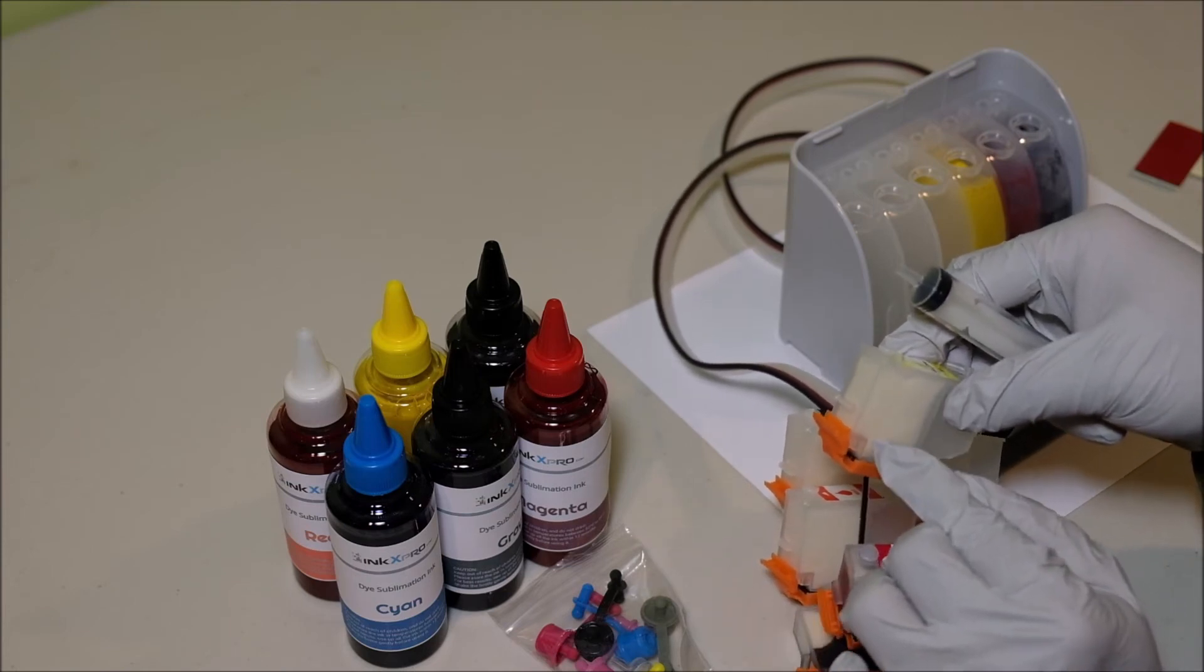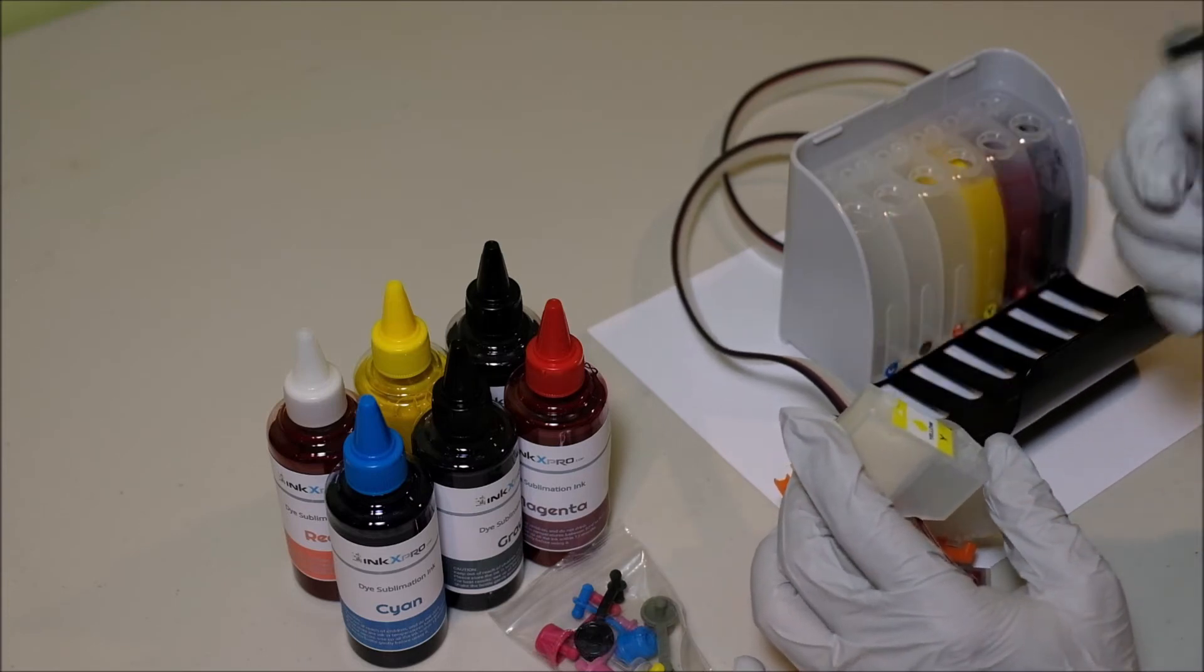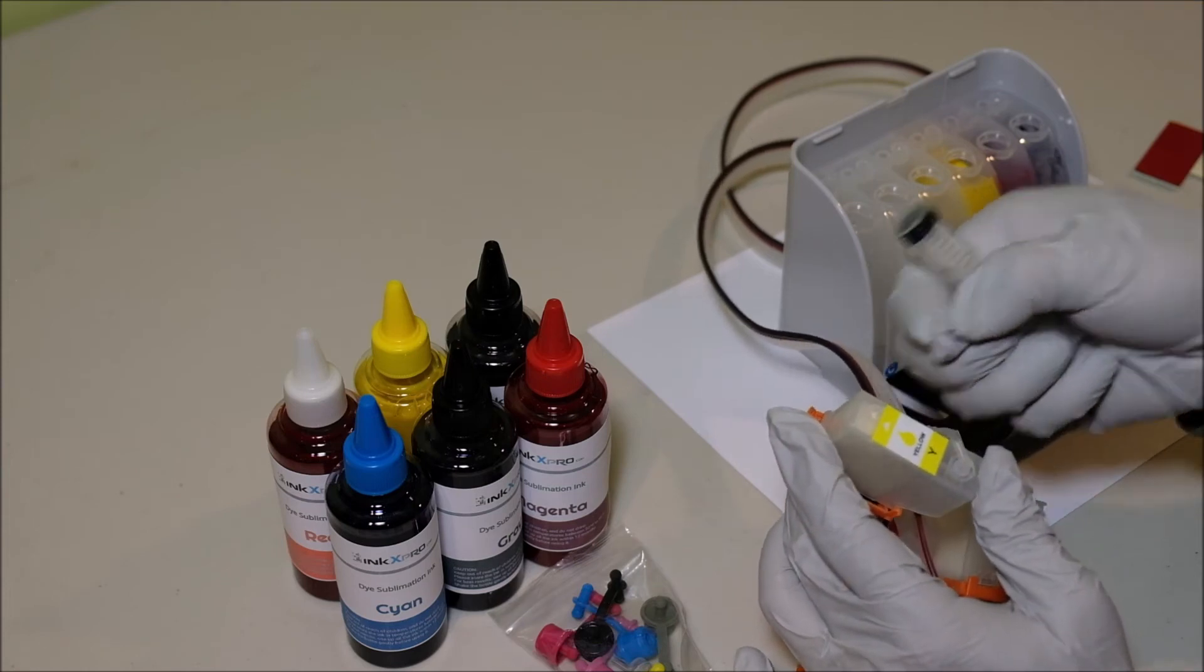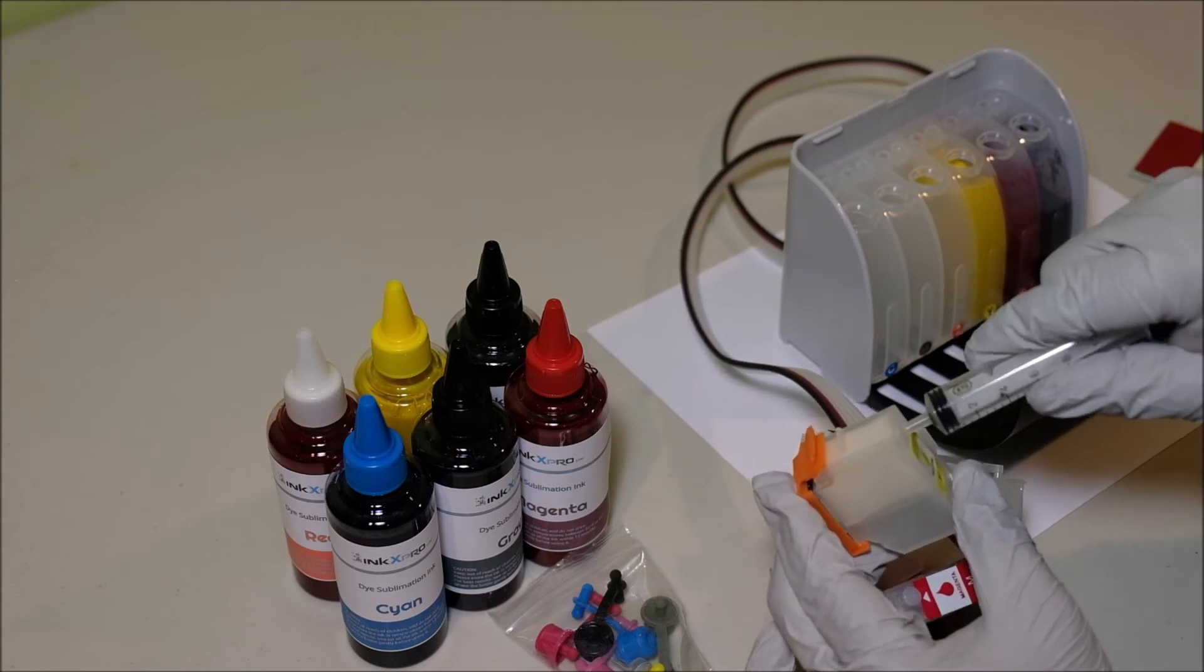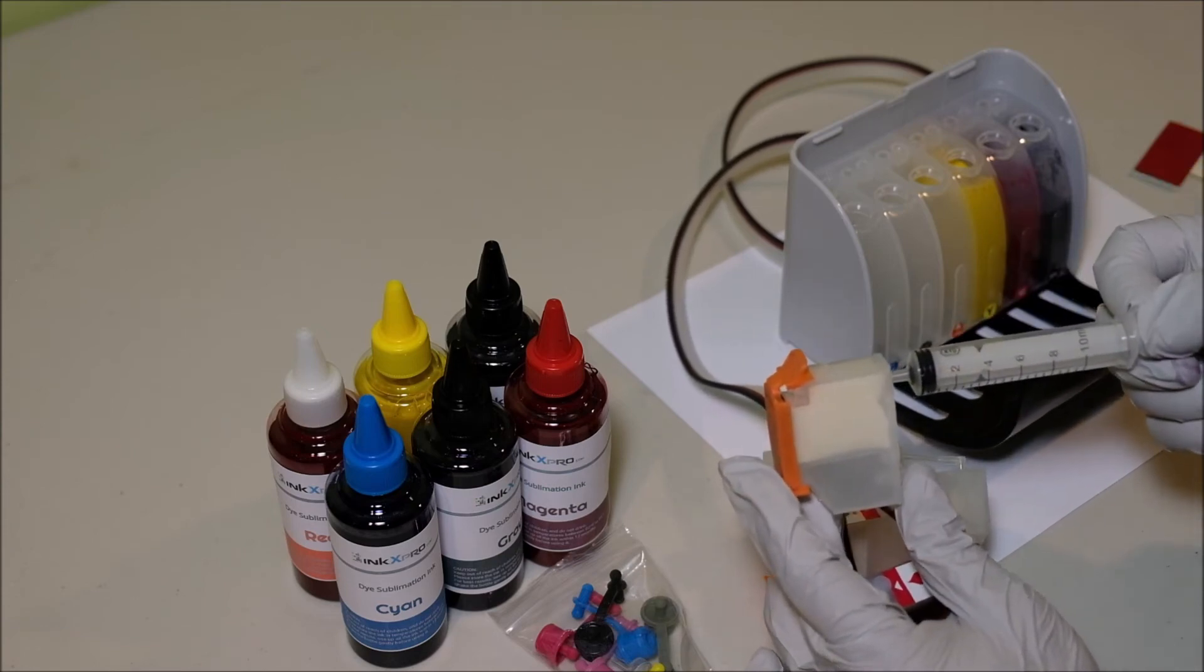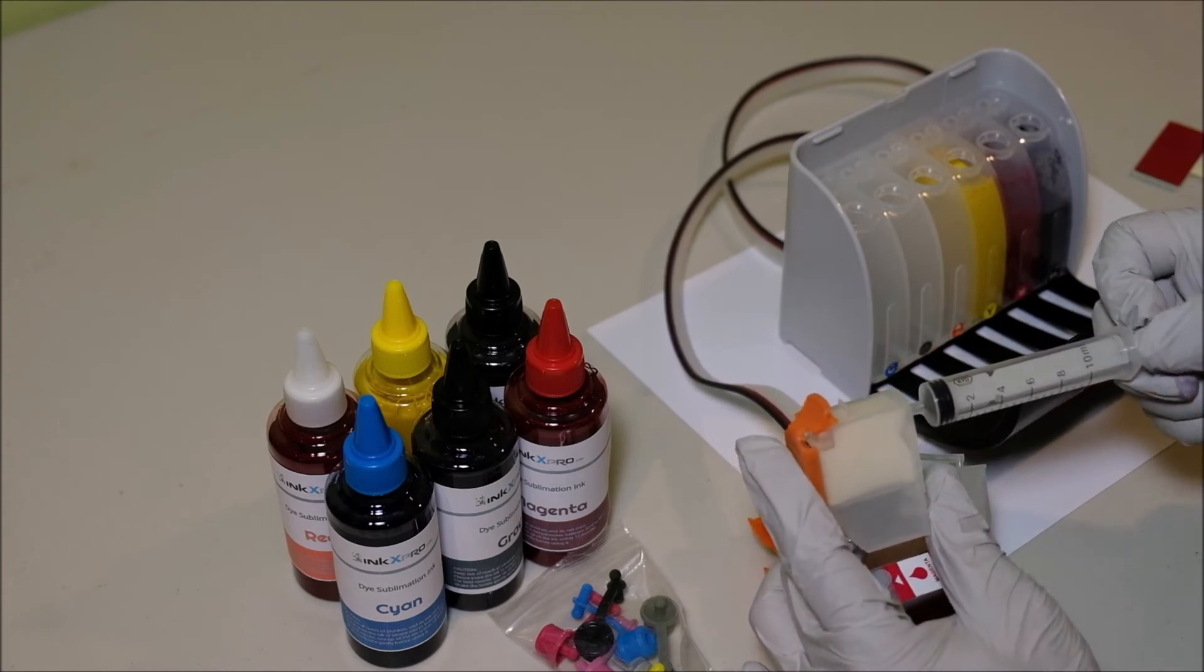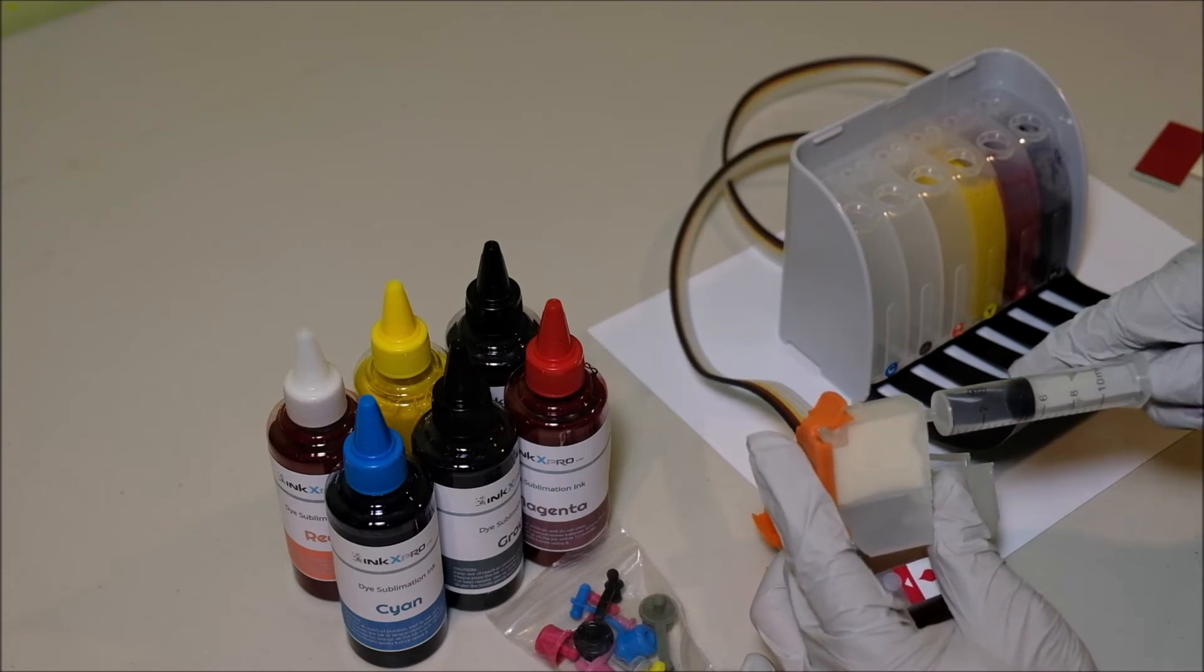You don't want ink leaking from here when you prime it. So remove the plug on the top and use the syringe, connect to the air hole here. Then you're pulling the air out of the cartridge. Basically, you're pulling the ink from the reservoir.